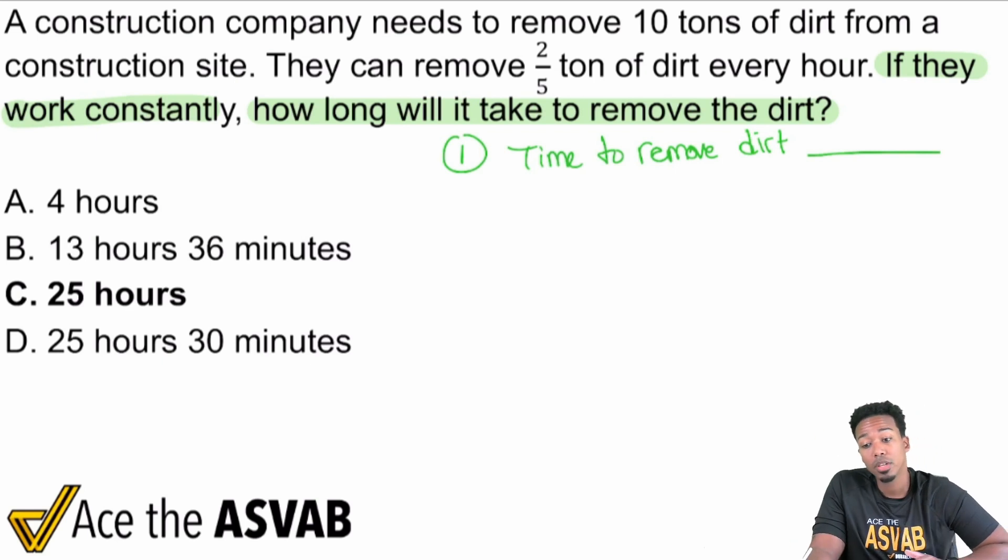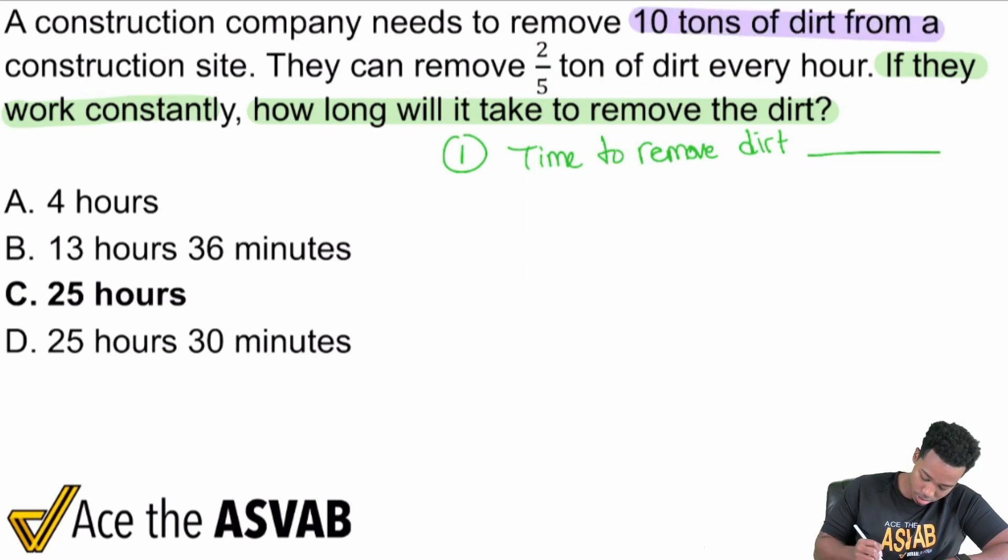All right, so we're taking a look at the rest of the information and we're gonna make a decision as to what we're gonna do with these numbers. But remember, it's about knowing what the numbers mean so you know what to do with them. Then the calculating comes in. It reads here, a construction company needs to remove 10 tons of dirt from a construction site. They can remove two-fifths of a ton of dirt every hour. So we have 10 tons of dirt to remove.